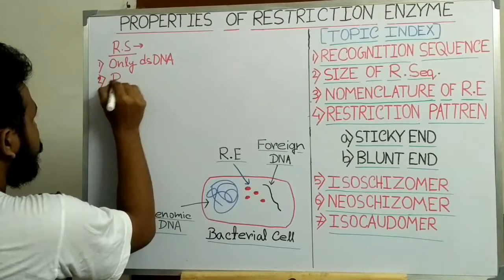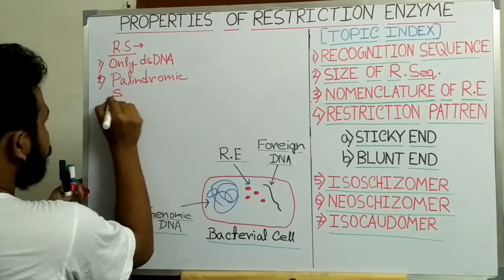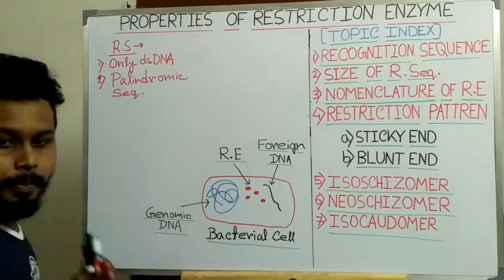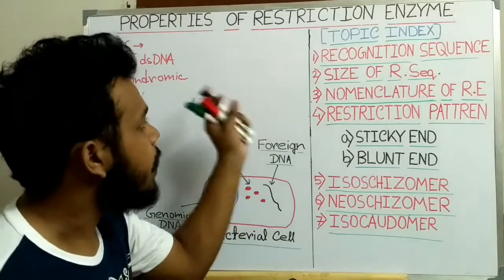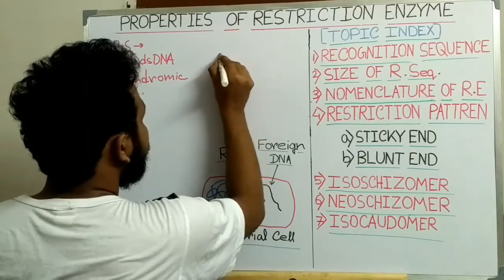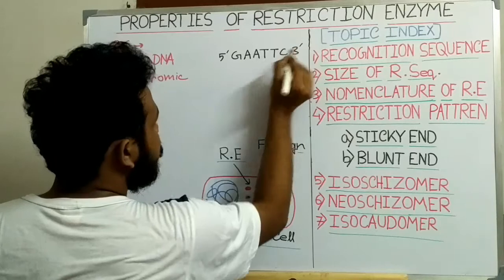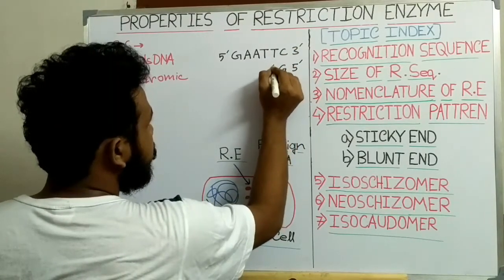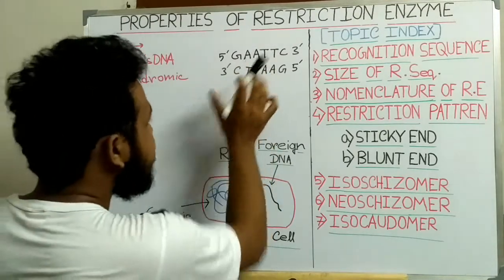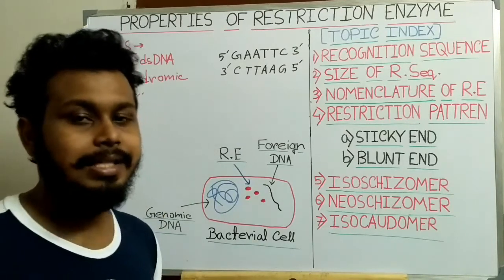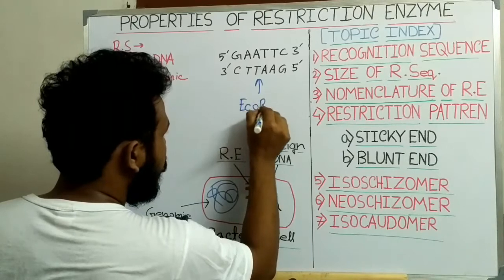The second point is that this recognition sequence is also called the palindromic sequence. Now let me write a recognition sequence like this: 5' GAATTC 3' and 3' CTTAAG 5'. This is the recognition sequence and this sequence is recognized by a particular restriction enzyme called EcoR1.